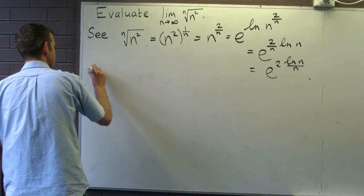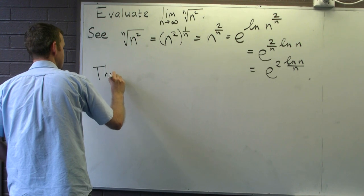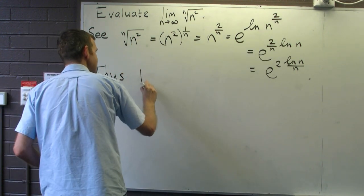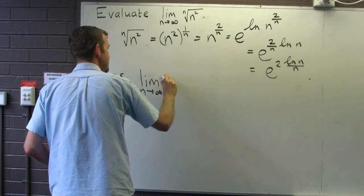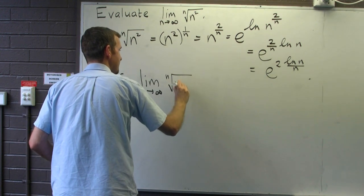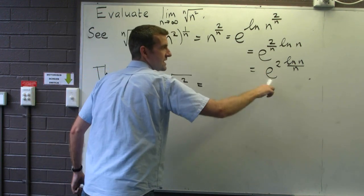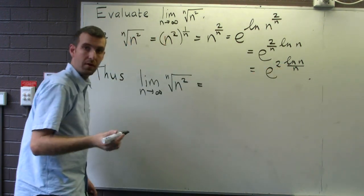So the limit of our sequence is just the limit of this e to the 2 log n all over n.